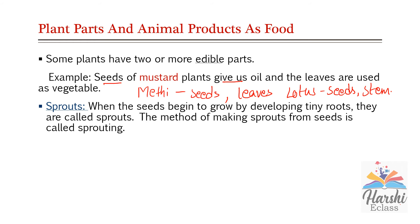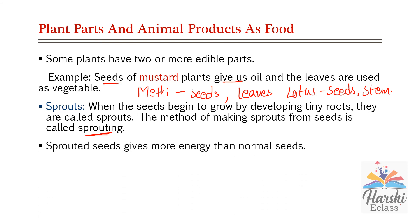Let's see about sprouts. When seeds begin to grow by developing tiny roots, they are called sprouts. The method of making sprouts from seeds is called sprouting. The simple steps: take some dry seeds of moong or chana, put a small quantity in a container filled with water and leave aside for a day. Next day, drain the water completely and wrap the seeds with a wet cloth. The following day, you can observe white-colored tiny root-like structures — those are called sprouts. Sprouted seeds are richer in vitamins compared to normal seeds.